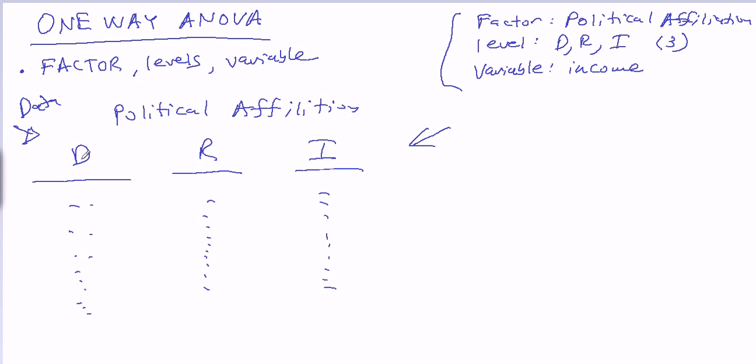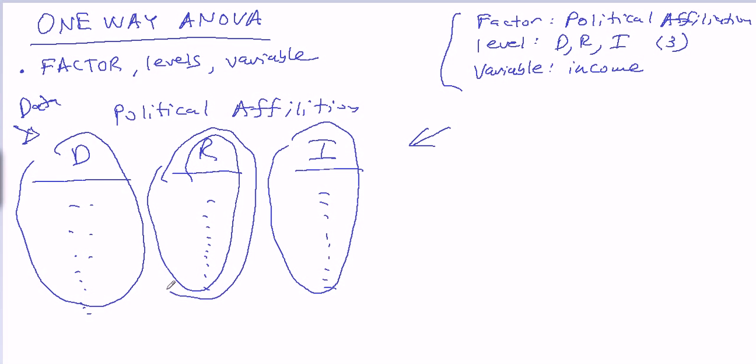So we have each of these is a group or a population, and we took a random sample from each of the populations. Obviously, we can't get all the incomes from all the Republicans or all the Democrats or all the independents. So from each of these groups, we took a random sample, which is the basic idea behind a lot of statistical procedures. We made sure that the samples were independent of each other. In other words, that these guys were not brothers and sisters across the groups or family members and so forth.